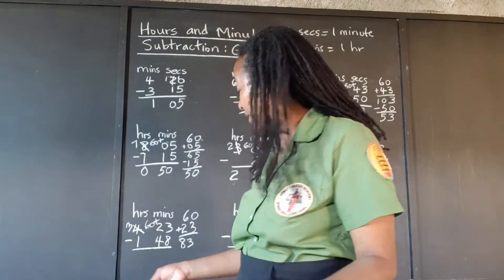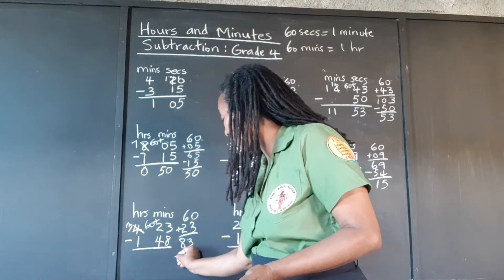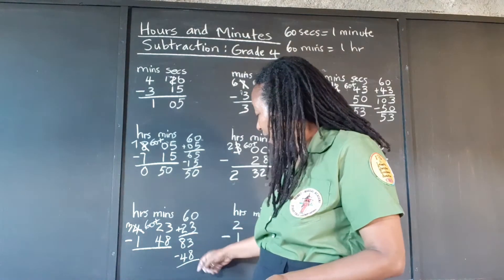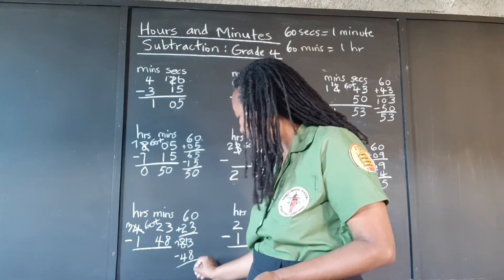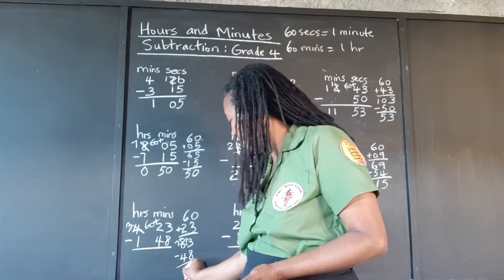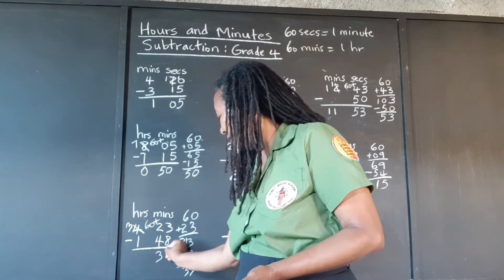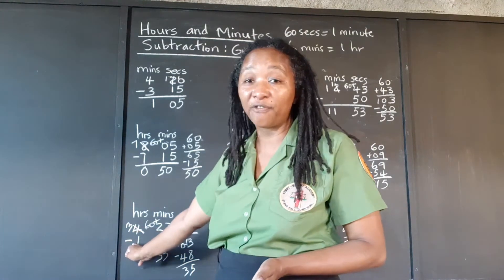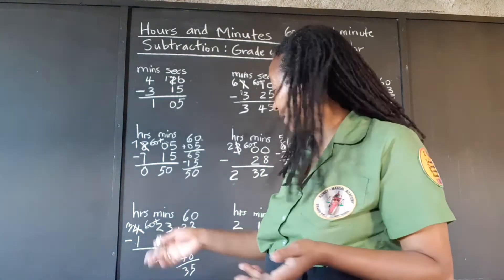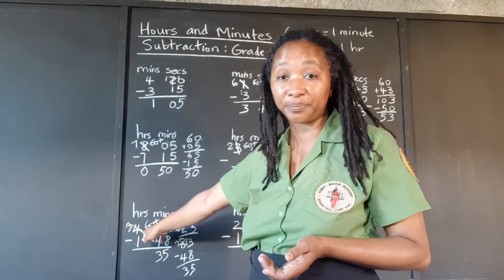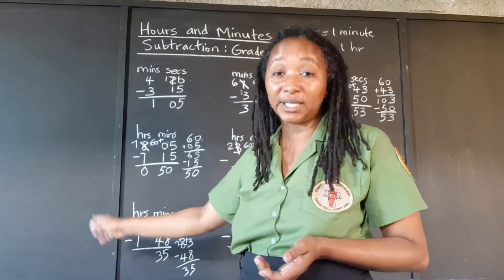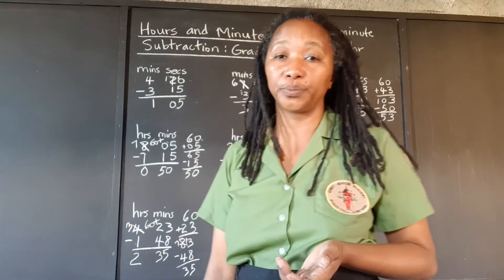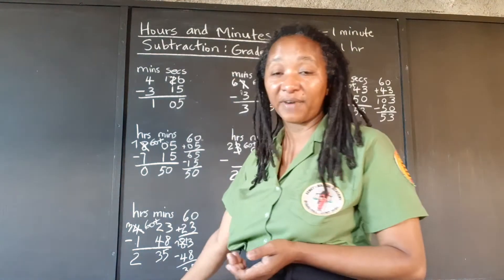Now we're feeling proud — we have enough. We subtract 48 from 83: 8 from 13 is 5, so we have 35 minutes left. Remember, it's no longer 4 hours because we took 1 hour for the 60 minutes. It's 3 hours, and we're taking 1 from it, leaving 2. The answer is 2 hours and 35 minutes.